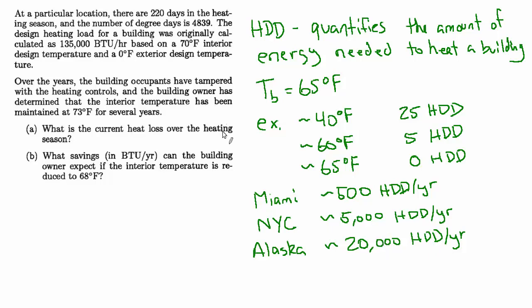But coming back to this specific problem, we've been told that there are 4,839 heating degree days and that the heating season is 220 days long. So we can figure out the average delta T. All we have to do is take the 4839 heating degree days and the units are degrees times days and divide by the number of days, which is 220. Days cancels out and we get 22 degrees. That's the average delta T throughout the heating season.